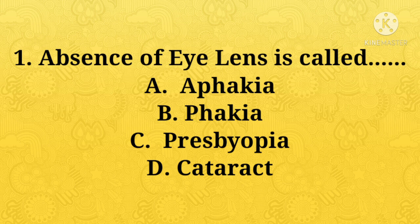First question: absence of lens is called — option A: aphakia, B: biopia, C: blepharact. Option A, aphakia, is the right answer.